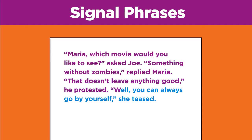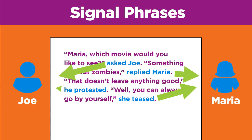'Well, you can always go by yourself,' she teased. The phrases 'asked Joe,' 'replied Maria,' 'he protested,' and 'she teased' are signals that tell a reader who is saying what.